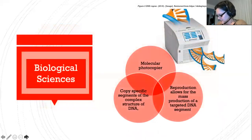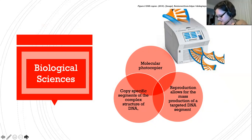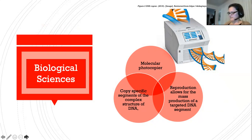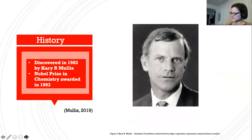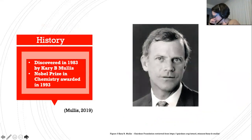PCR is a three-step process used in molecular biology to detect and amplify segments of DNA. It has been referenced as the molecular photocopier as it allows scientists to copy specific segments of a complex DNA molecule, allowing for the multiplication of target DNA segments. What is now known as PCR was discovered in 1983 by Kary B. Mullis.